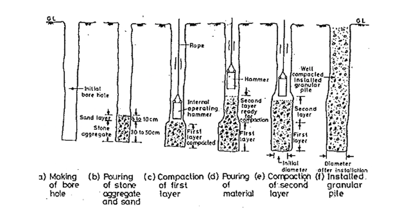We can see the figure, which clarifies the process. The first figure shows making a borehole using a spiral auger. At the bottom of the borehole, we put the stone aggregate layer varying from 30 to 50 cm. Above that, we put the sand layer of 5 to 10 cm. Once the layers are placed inside the hole, we use the cast-iron hammer for compaction.